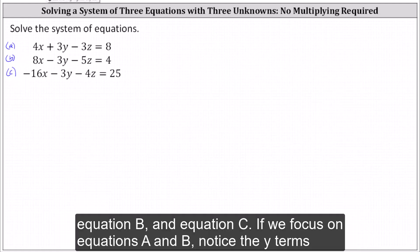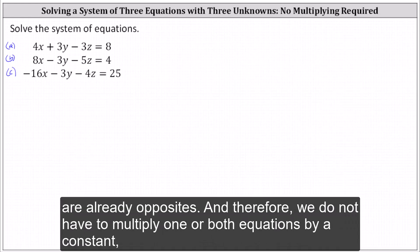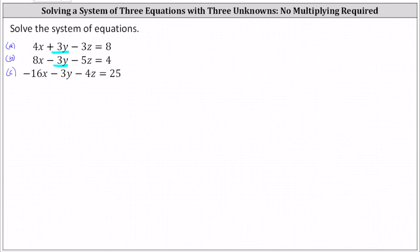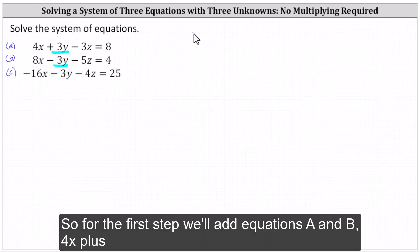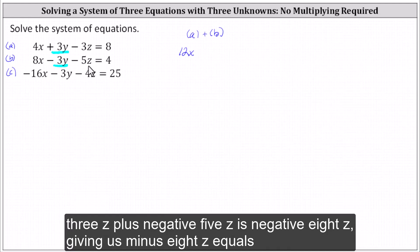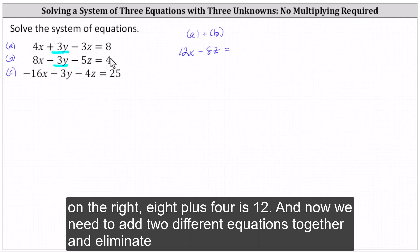If we focus on equations A and B, notice the y terms are already opposites, and therefore we do not have to multiply one or both equations by a constant. If we add these two equations together, the y terms will simplify out. So for the first step, we'll add equations A and B: 4x plus 8x is 12x, 3y plus negative 3y is zero, negative 3z plus negative 5z is negative 8z, giving us 12x minus 8z equals 12.